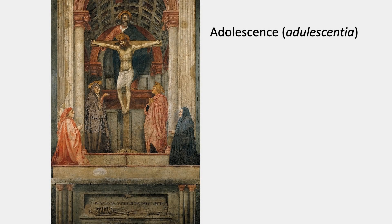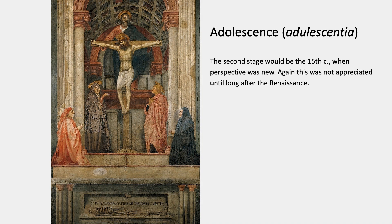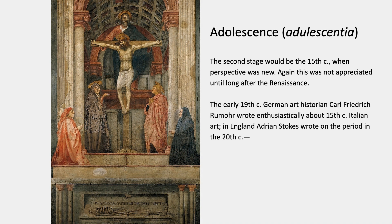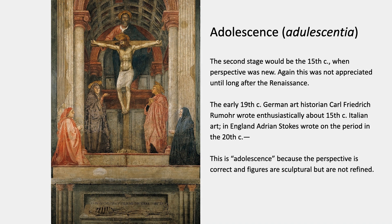Next comes adolescence — the 15th century when perspective was fresh, newly discovered or invented. Again, this stage wasn't appreciated until long after the Renaissance. It took about four centuries; it was praised in the early 19th century by Carl Friedrich Hummer, a German art historian who wrote very enthusiastically about it, and then later in the 20th century in England by authors like Adrian Stokes and other modernists. This is adolescence because the perspective is correct and the figures are sculptural, but they're not refined — it's all very straightforward and architectural. That's Masaccio's Trinity, often said to be the first geometrically correct perspective painting, and it's in all the survey textbooks for that reason.